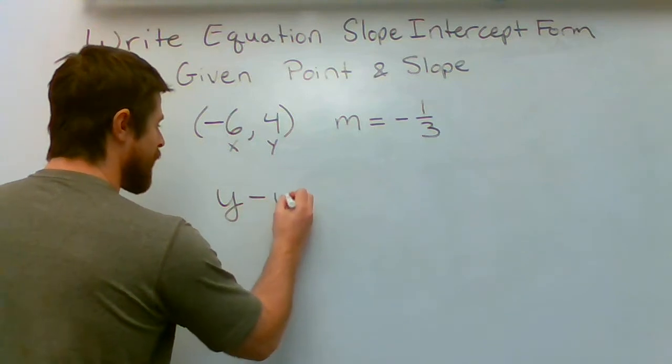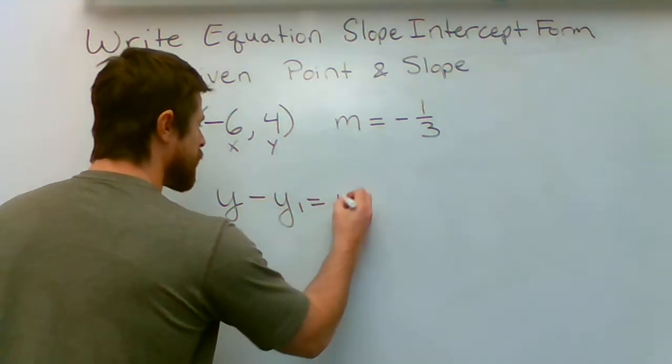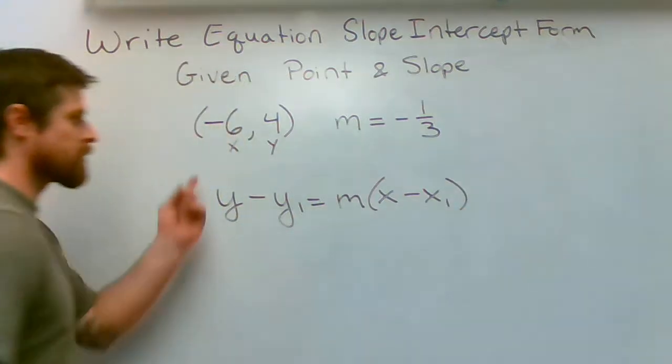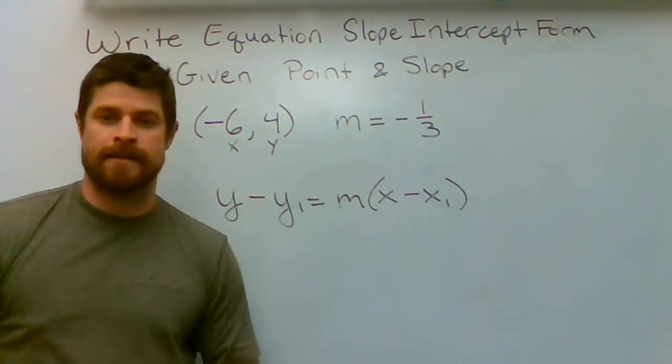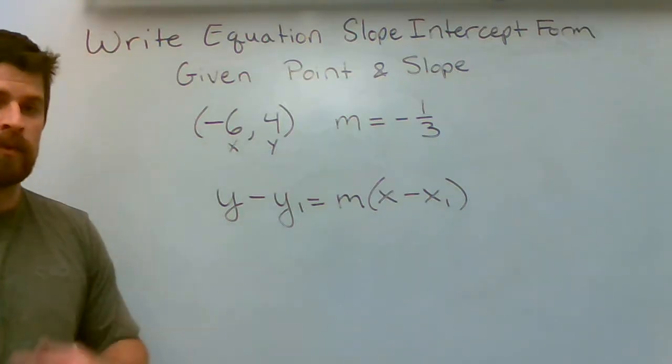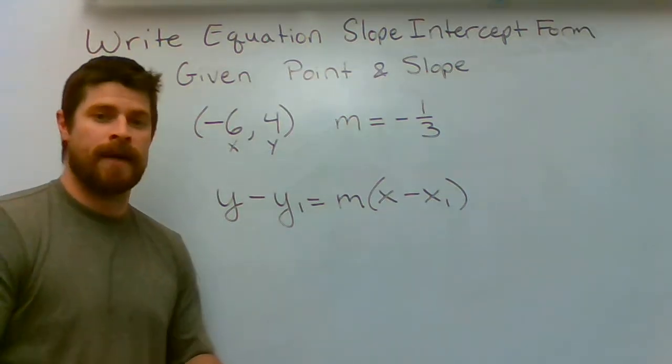We're going to say Y minus Y1. You should already know how to write out your equation in what's called point-slope form if you're taking this test. Okay, so here it is right there: Y minus Y1 equals M times X minus X1.